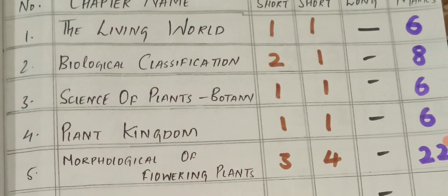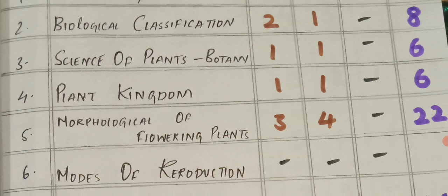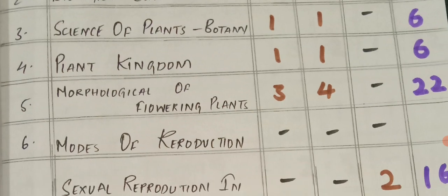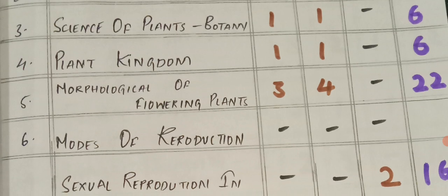Science of plants: 1 VSCQ and 1 SCQ. Plant kingdom: 1 VSCQ and 1 SCQ.